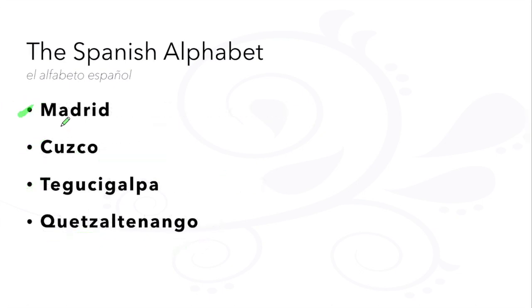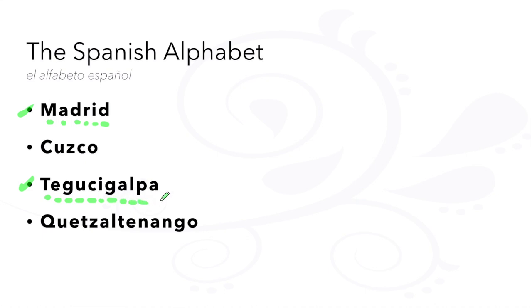Now you can spell things out, for example: M-A-D-R-I-D, or even a harder word like T-E-A-C-H-E-R, going through each letter one by one.